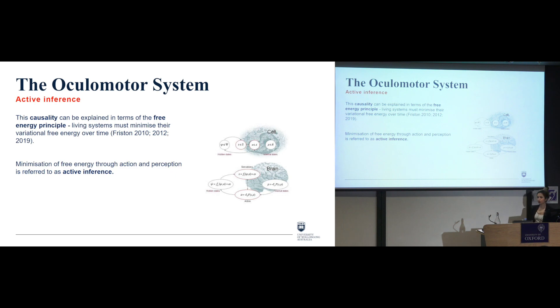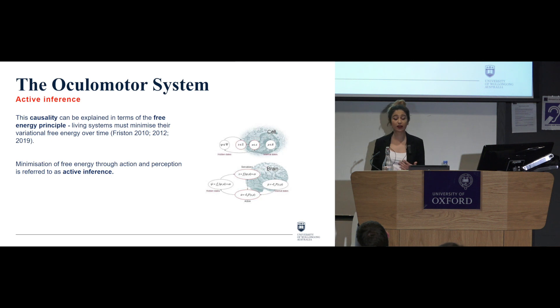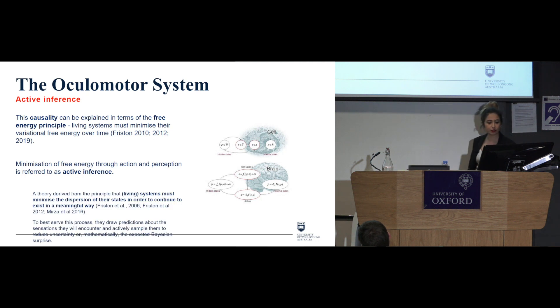Okay, this causality between action and perception can be explained in terms of the free energy principle, which is that living systems must minimise their variational free energy over time, and this minimisation of the free energy through action and perception is referred to as active inference. Active inference, very briefly, is just this theory that is derived from the principle that living systems must minimise the dispersion of their state in order to continue to exist in a sort of a meaningful way. And in order to do that, to find the things that are relevant to their own existence so that they don't die, they draw these predictions about the sensations that they will encounter and actively sample them in them to reduce this uncertainty or mathematically the expected Bayesian surprise.